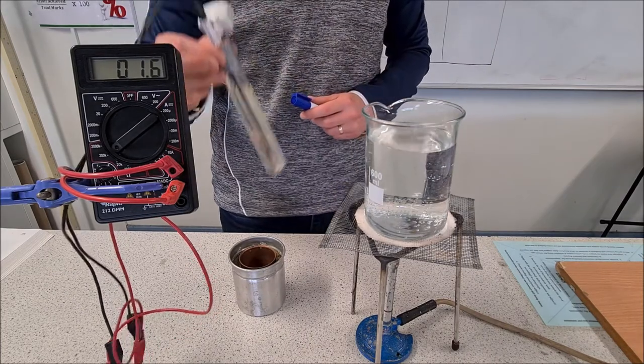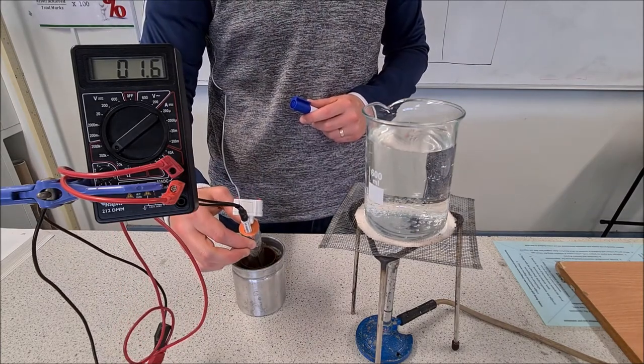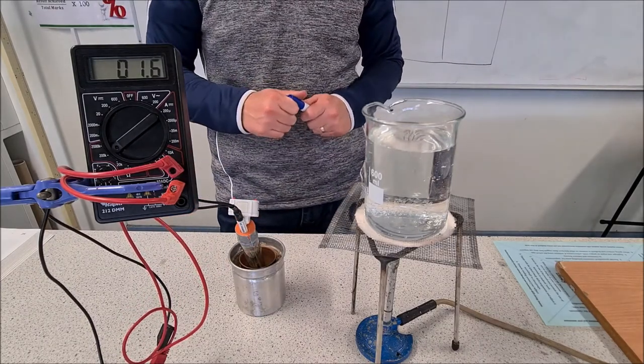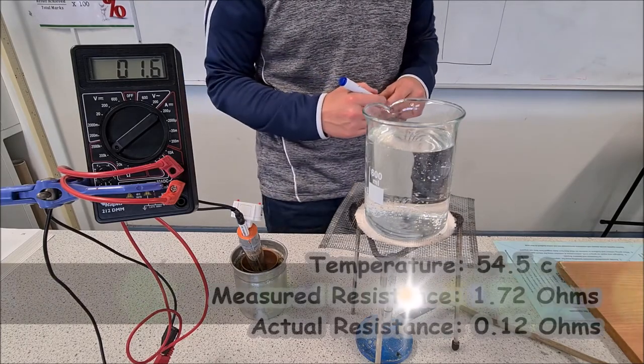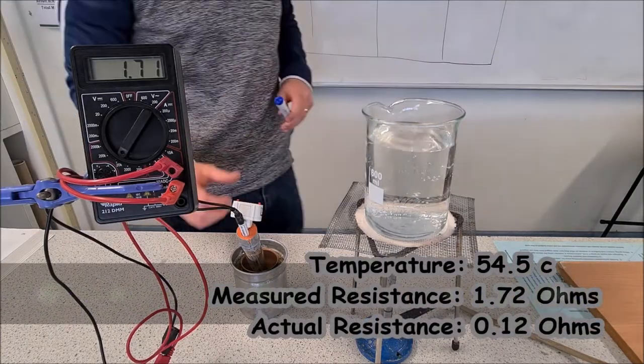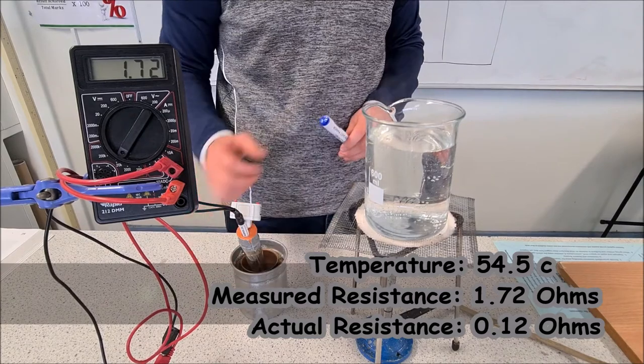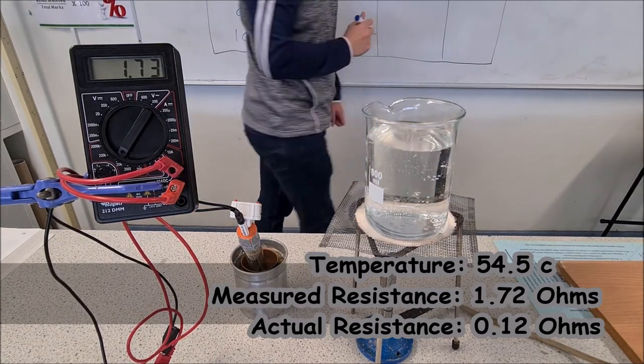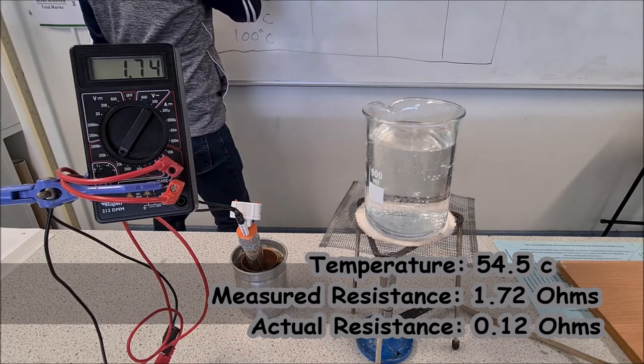So we're going to take it out now again. We're coming up on 50 degrees. We're going to give it a bit of time to slow down. So it's gone above 50 there now. 55 degrees. So what is the resistance there now? 1.72. And the temperature is 54.5.